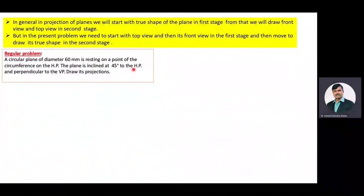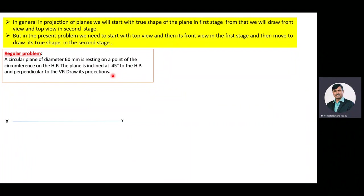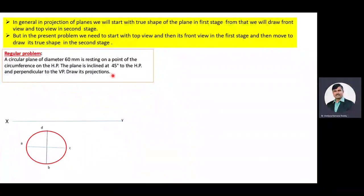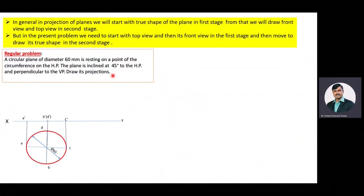This is a regular problem. In this problem the information supplied is: plane is inclined to the HP and perpendicular to the VP, and they are asked to draw projection of the plane. In order to start the projection of the plane we need to assume the plane is parallel to the HP, because the plane is inclined to the HP. Here the true shape of the plane is a circle of diameter 60 mm. The true shape of the plane is visible in the top view. After drawing the true shape of the plane in the top view, we will draw its corresponding front view, which is a line view parallel to the XY line.